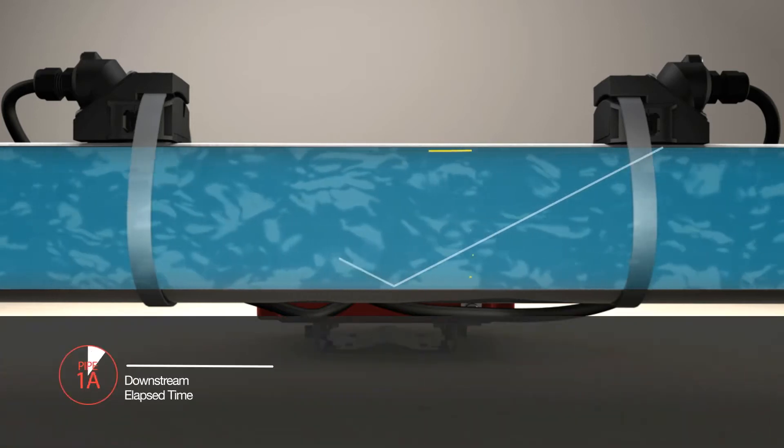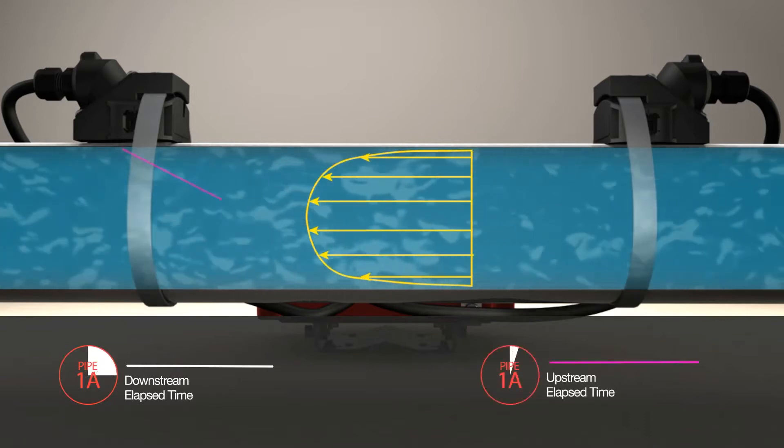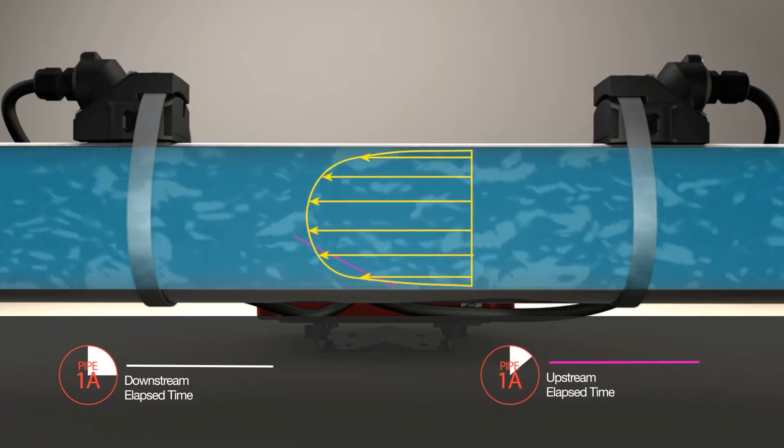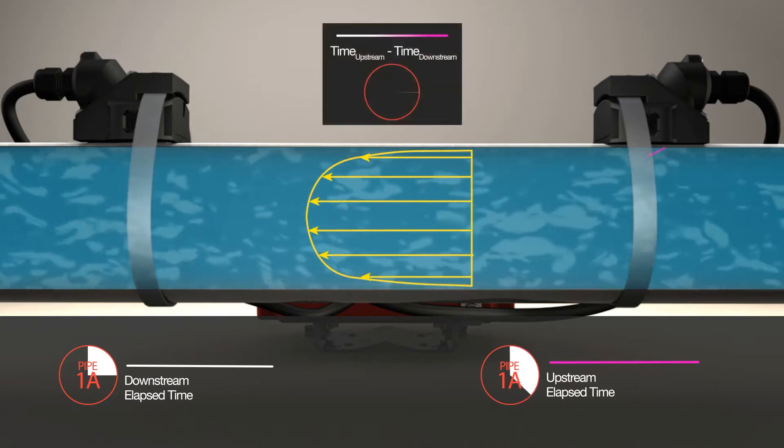The signal measures the average velocity across the flow profile rather than a single point, resulting in a more accurate reading. The difference between the upstream and downstream travel speeds are used to calculate fluid velocity.